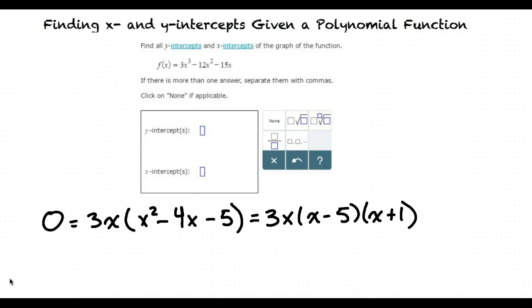In order to find the x-intercepts, we let f(x) be 0 and then solve for x. This means either 3x is equal to 0, x minus 5 is equal to 0, or x plus 1 is equal to 0.